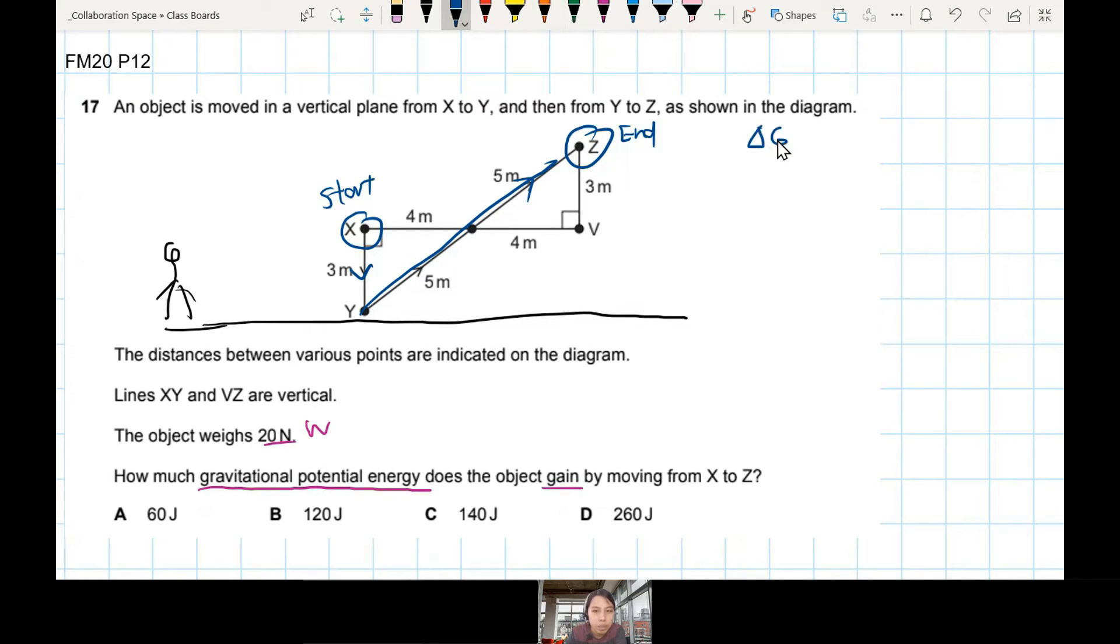The change in GPE can be calculated by MgΔH. Sometimes we say GPE, sometimes we say E_P, or sometimes we say U for potential. It's all the same thing, still potential energy.